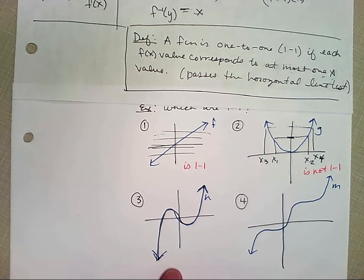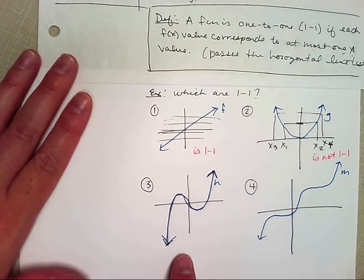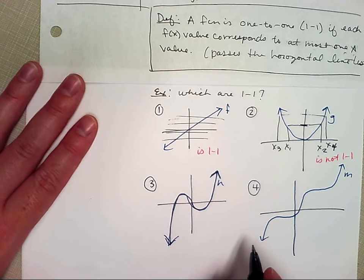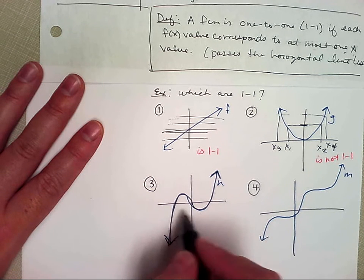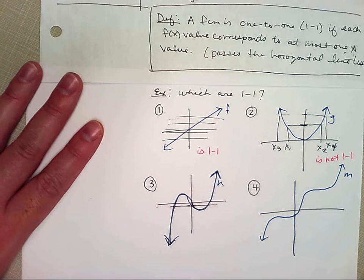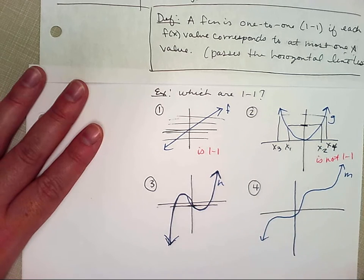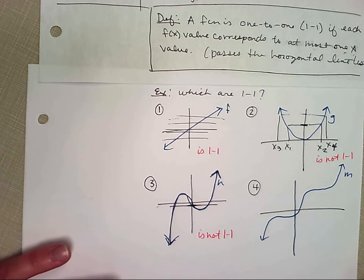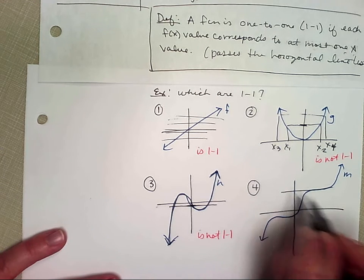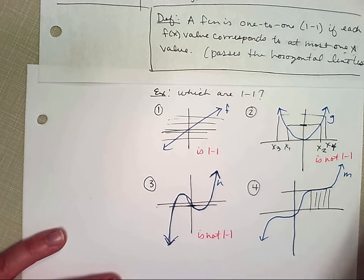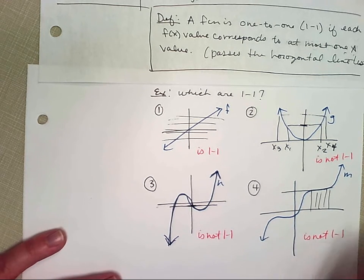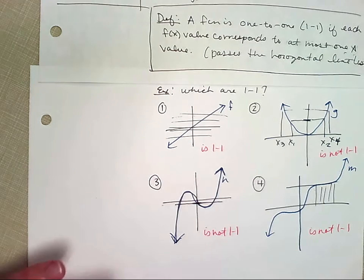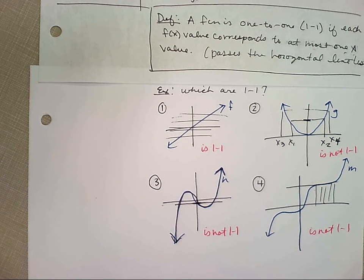It's the horizontal line test. So if I'm talking about when something is a function, I'm doing a vertical line test, right? I can only intersect at one point. So if I'm talking about a function being one-to-one, I'm talking about the horizontal line test, and I can only intersect each function at one point. So this is one-to-one, is not. What do you think about number three? Does it pass the horizontal line test? It intersects three times even, right? So no, doesn't pass the horizontal line test.